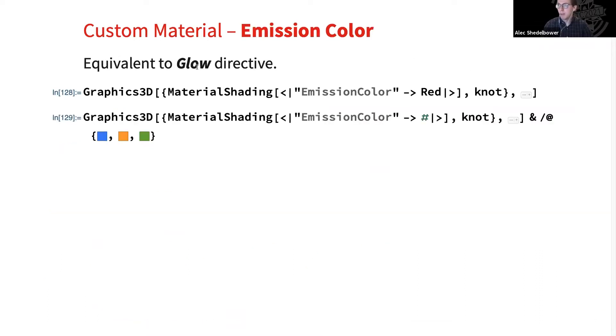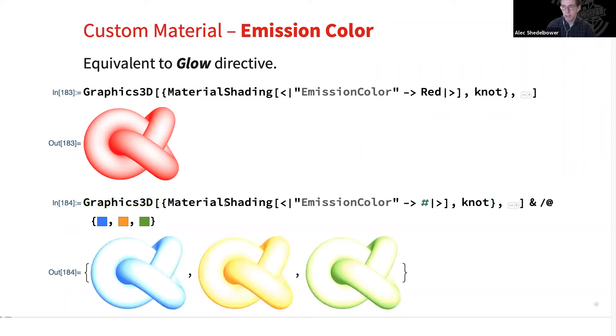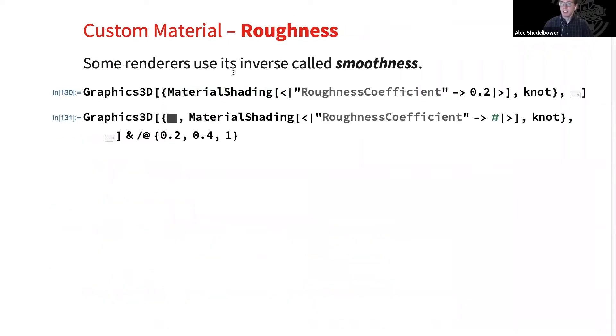Our next parameter here is the emission color. This one is equivalent to the Glow directive in the built-in system shader. So we can set the emission color here to red, and we'll see our material is kind of glowing red. So this is useful whenever an object is, for example, so hot that it's actually emitting a color. So if we use red colors on here, we can really see that glow effect.